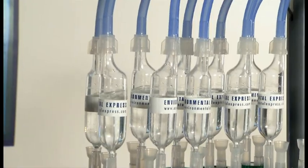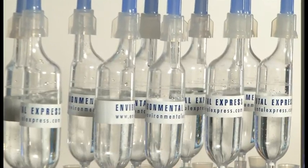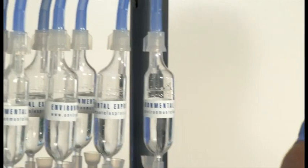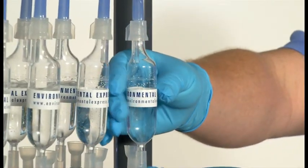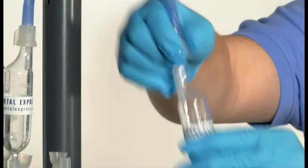After distilling for one hour, it's now time to disassemble the Simple Dist. It's important to keep the vacuum on during this process. First, remove the trap from the two-port cap. Now it's safe to break the vacuum by removing the tubing adapter.